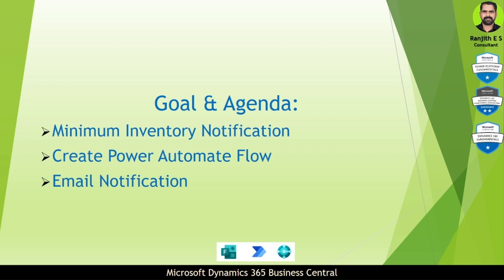Welcome to the video. In today's video, we are discussing how to get notified when an item inventory level reaches the minimum quantity. You will get notified using a Power Automate flow. We are going to discuss how to create a Power Automate flow to send a notification by email when an item quantity level reaches the minimum level in Business Central.